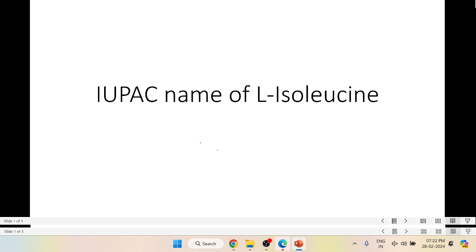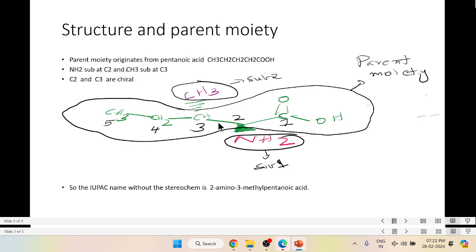And as usual, the L stands for the chirality of the amino acid, which is the left-handed chirality of the amino acid. So first, to look into the structure and do the IUPAC name, we have to look at the parent moiety. The parent moiety is depicted in green, and just like leucine, the parent moiety here is once again a pentanoic acid.